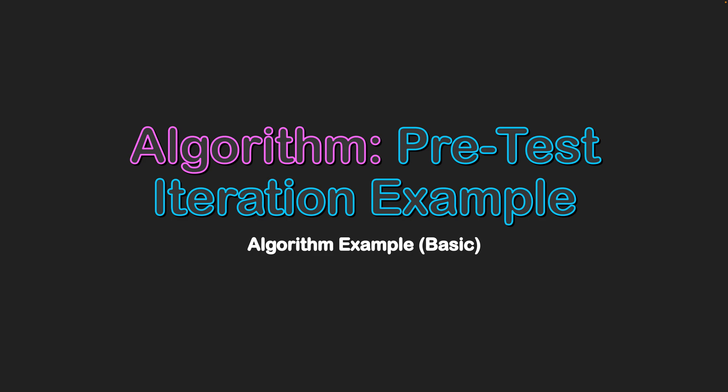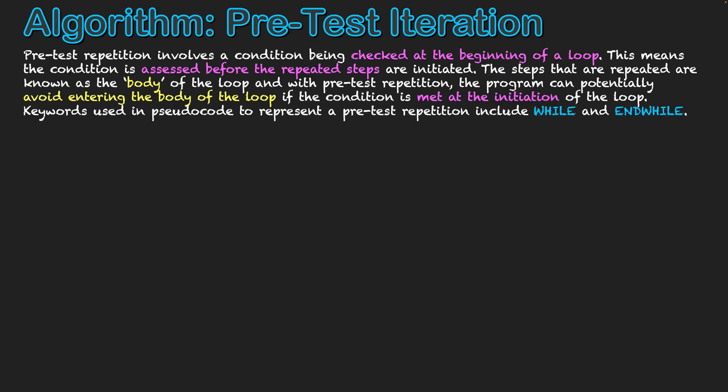Pre-test repetition involves a condition being checked at the beginning of a loop. This means the condition is assessed before the repeated steps are initiated. The steps that are repeated are known as the body of the loop, and with pre-test repetition, the program can potentially avoid entering the body of the loop if the condition is met at the initiation of the loop. Keywords in pseudocode used to represent pre-test repetition include WHILE and END WHILE.